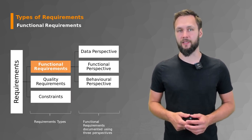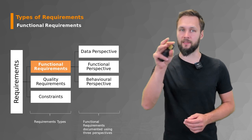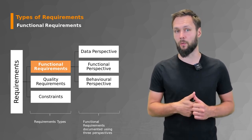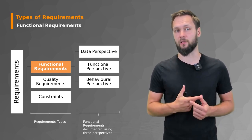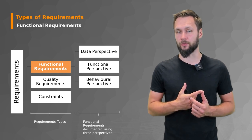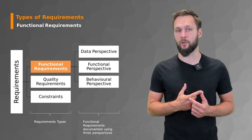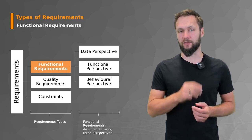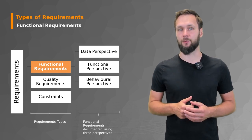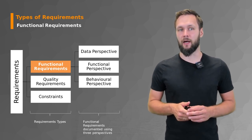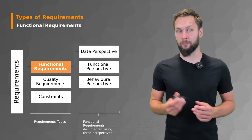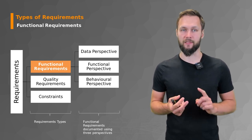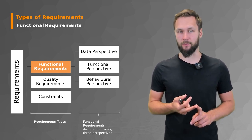We separated the requirements into three major types: first, functional requirements; second, quality requirements, which are also called non-functional requirements; and third, constraints. Functional requirements are often documented using three perspectives: the data perspective, the functional perspective, and the behavioral perspective.